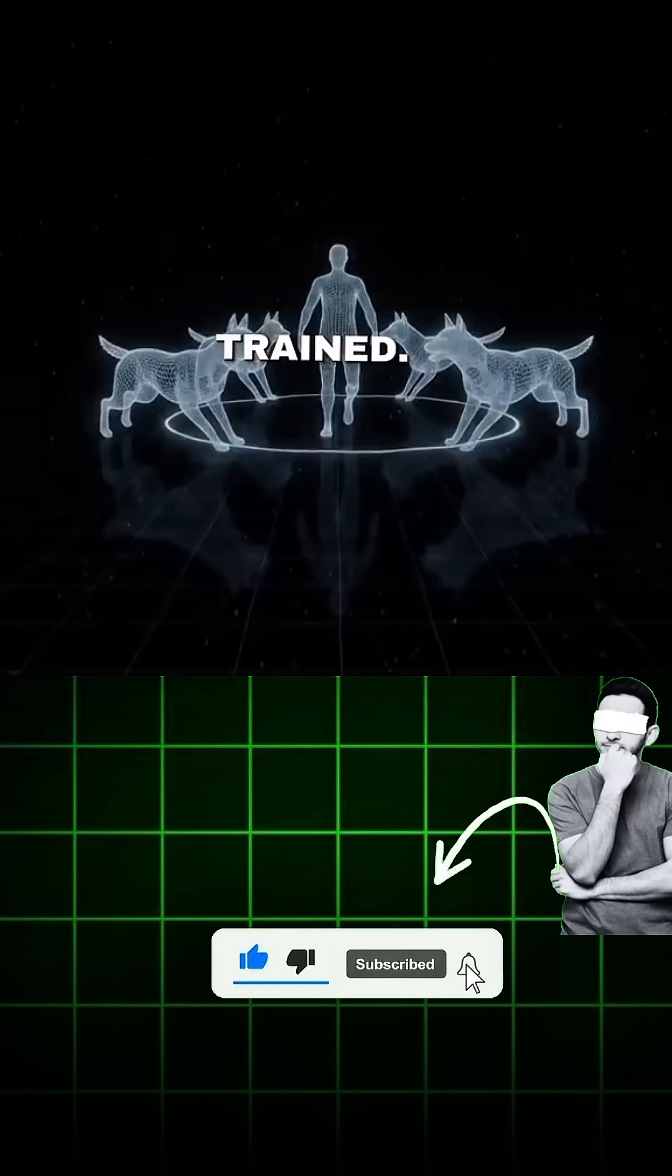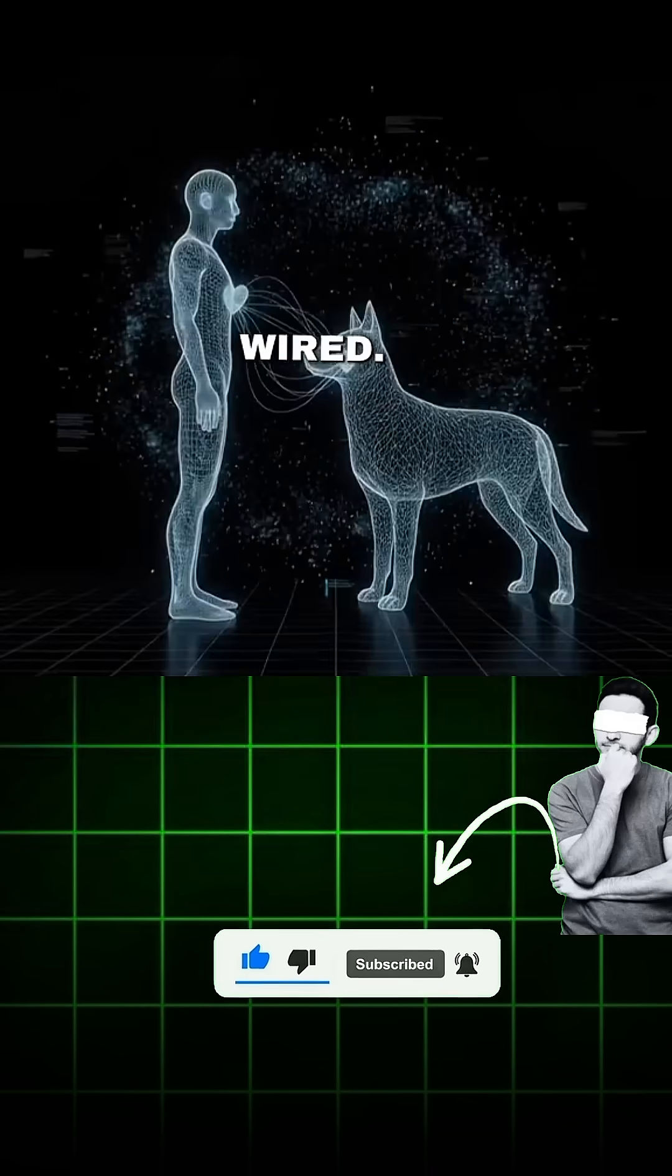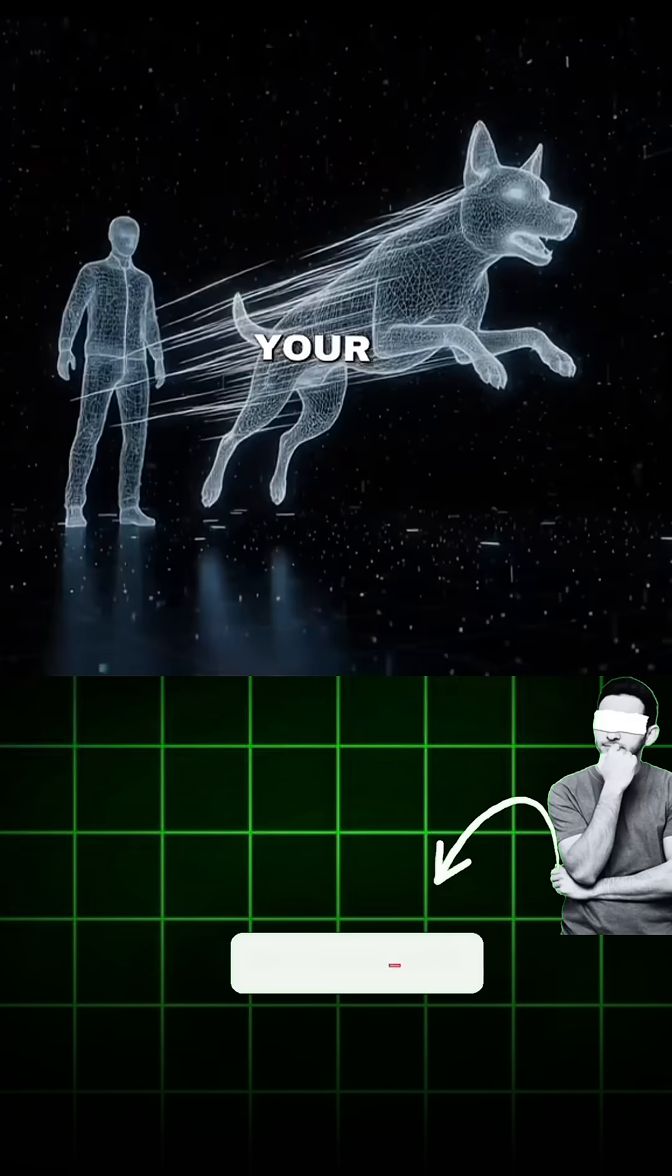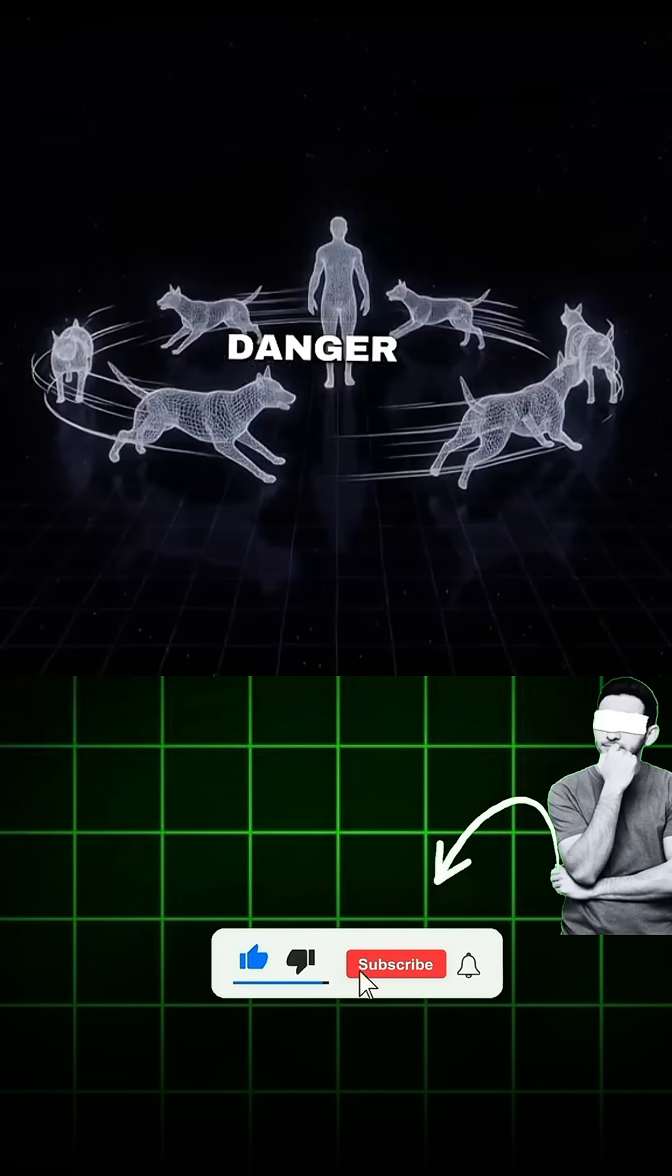Their loyalty isn't trained, it's wired. Evolution shaped dogs to guard the ones they trust most. To them, your safety equals peace.